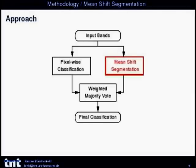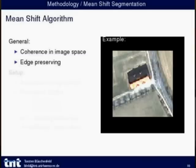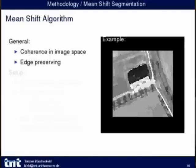The mean shift segmentation, on the other hand, provides coherence in image space and is edge preserving — that is why we chose it. You could also consider watershed, for example. Applied to this house image, the segmentation first looks like a quantization of pixel intensity values.